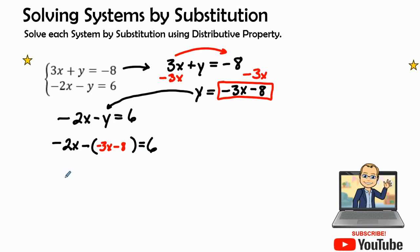Let's go ahead and simplify -2x. A negative and a negative is a positive, so the opposite of -3x is a positive 3x, and a negative times a negative, which is the opposite of -8, is a positive 8, and that all equals 6.